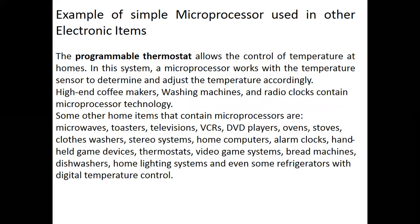High-end coffee makers, washing machines, and radio clocks contain microprocessor technology. Some other home items that contain microprocessors are microwave ovens, television, VCR, DVD player, oven, stove, cloth washer, stereo system, home computer, alarm clock, hand-held game devices, thermostat, video game systems, bread machines, dishwasher, home lighting systems, and even some refrigerators with digital temperature control.